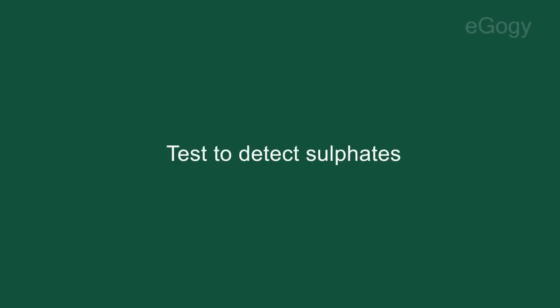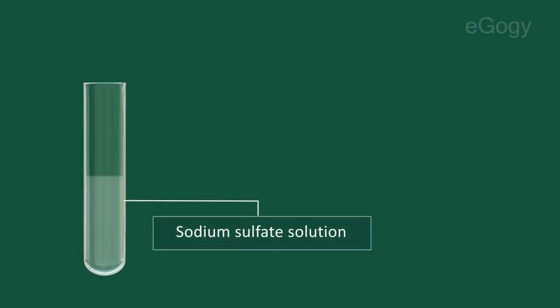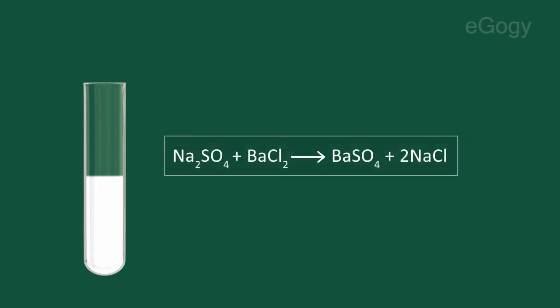Test to detect sulfates. Take a small quantity of aqueous solution of sodium sulfate in a test tube. Add three or four drops of barium chloride solution into it. When a solution of barium chloride is poured into the solution of sodium sulfate, a white precipitate of barium sulfate is formed. Na2SO4 on reaction with BaCl2 gives BaSO4 and 2NaCl.